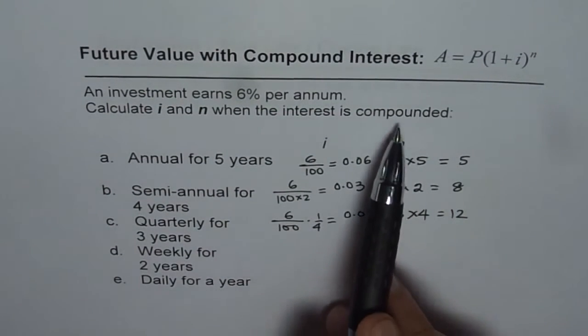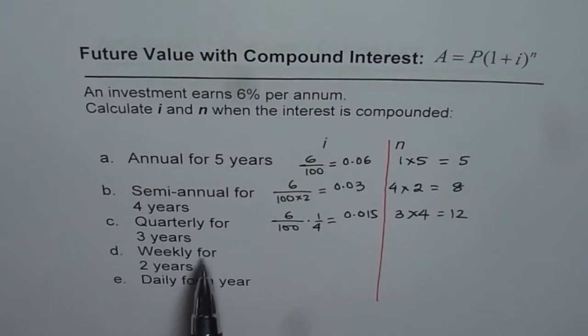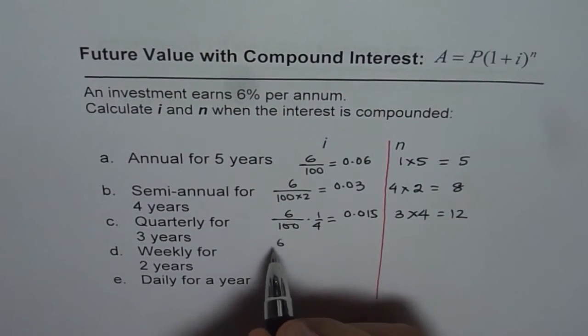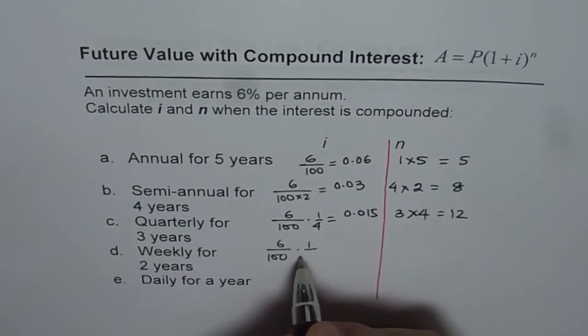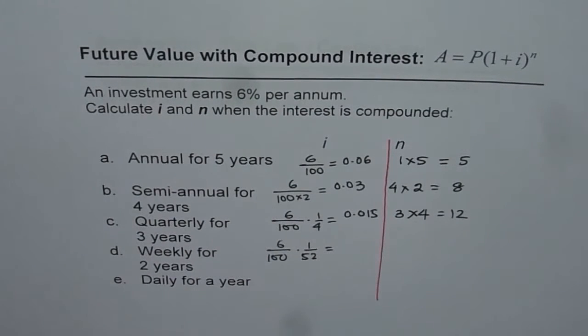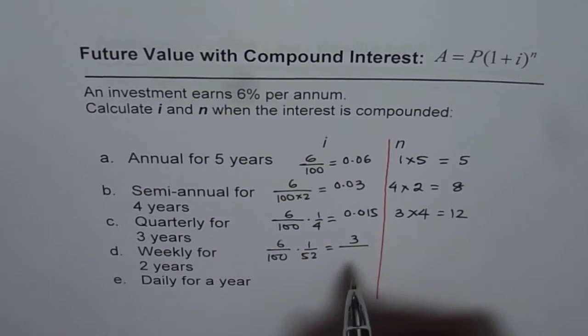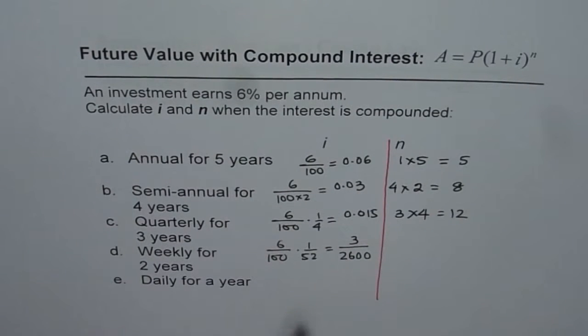Now the next one is when it is compounded weekly for 2 years. Weekly, there are 52 weeks in a year. So we will divide this 6 over 100, 6% per annum by number of weeks which is 52. So that will be 0.06 divided by 52. Or let me write the fraction value itself which is better. We will use 3 over 2600 which is kind of simplified form of this fraction. So we will use this value.